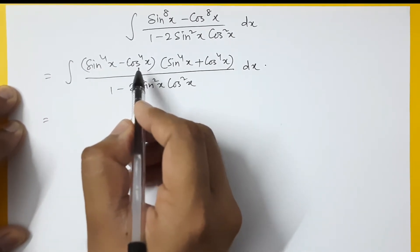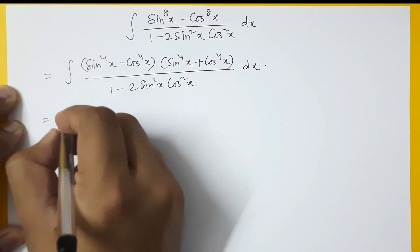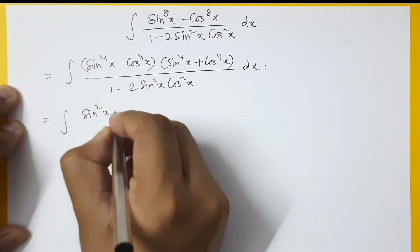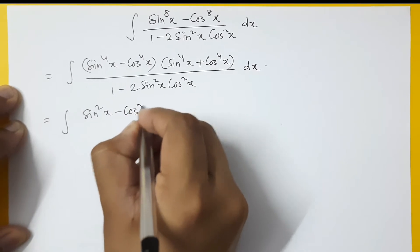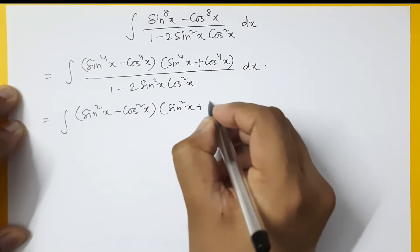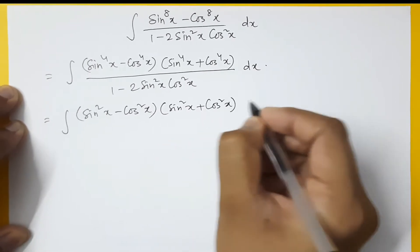So in this term, you again apply the formula a² - b². So this will be (sin²x - cos²x)(sin²x + cos²x).